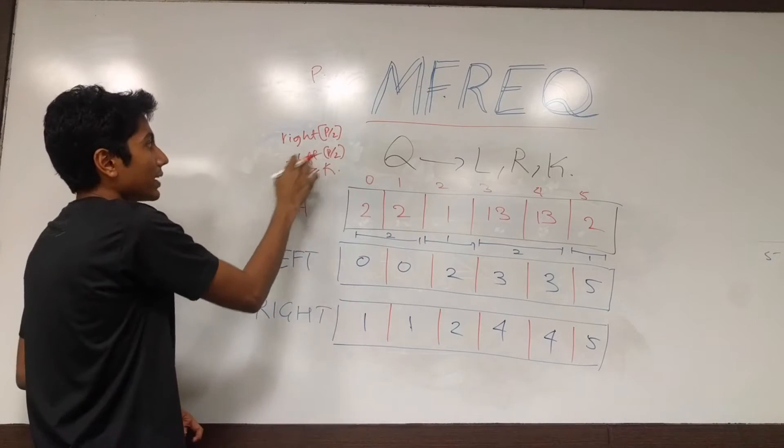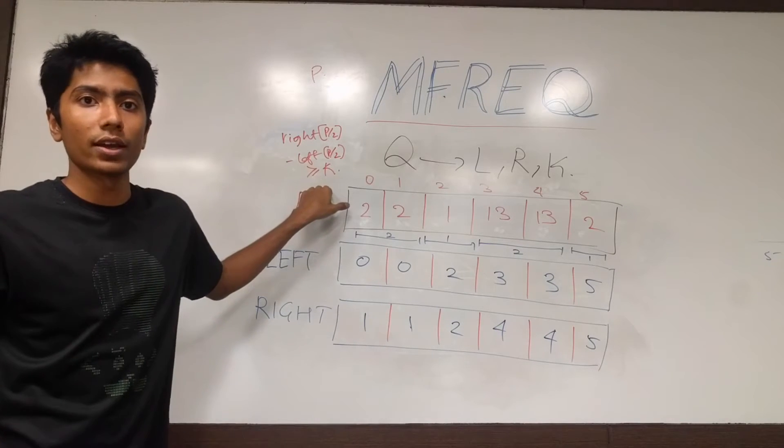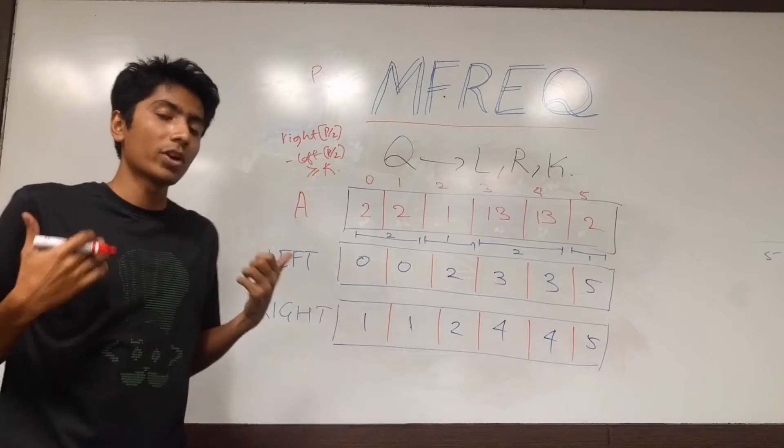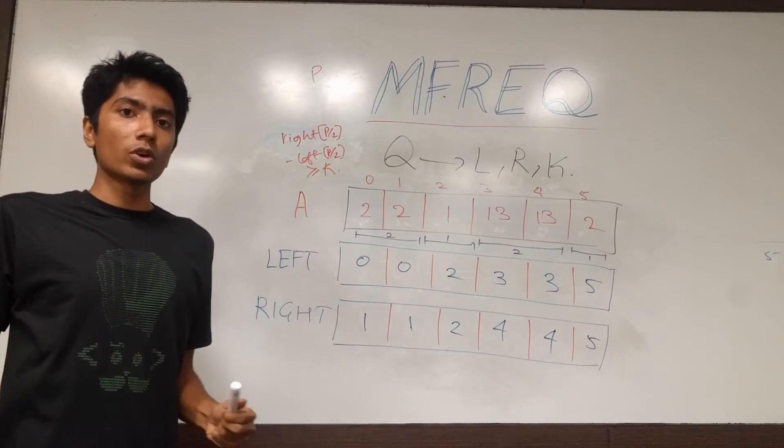And right of that, minus left of that, has to be greater than or equal to k. Only then will you output yes, otherwise all conditions fail and you just output no.